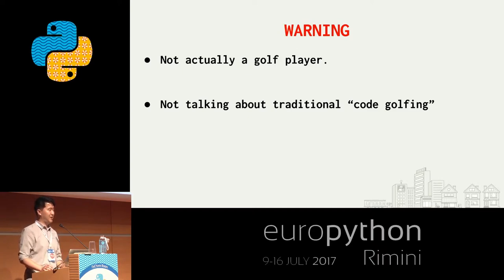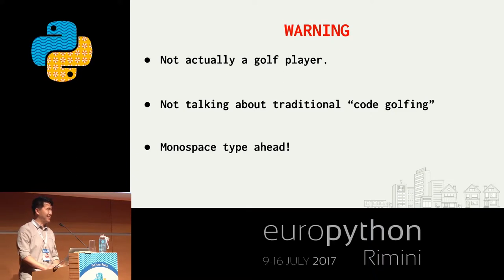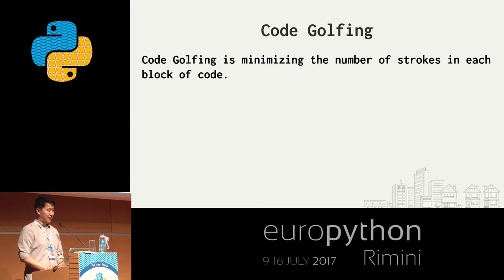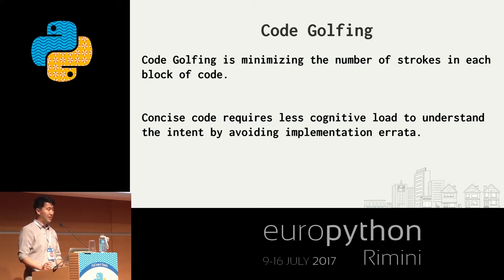The way I'm going to express code golfing is a way that generates more readable code while being more concise. And because we're talking about code, I use a lot of monospace type, so if that hurts your eyes, I'm sorry. For me, I'm defining code golfing as minimizing the number of strokes in each block of code. My thesis is that concise code requires less cognitive load to understand, because we spend a lot more time reading code than we actually do writing it.